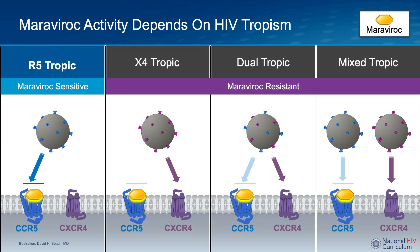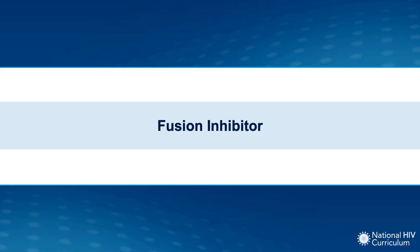It's very important to understand that Maraviroc is effective only when a person has pure R5-tropic HIV. With X4, dual, and mixed-tropic types of HIV, if the CCR5 co-receptor is blocked by Maraviroc, HIV can still enter the cell by taking the path of least resistance via the CXCR4 co-receptor.